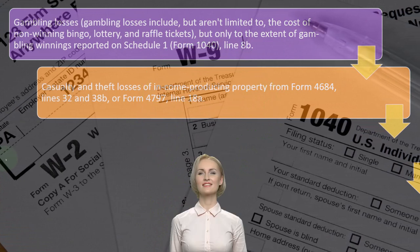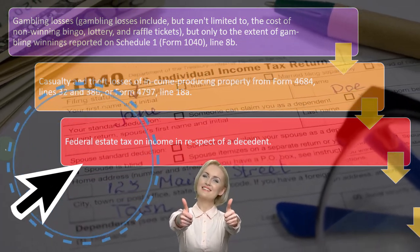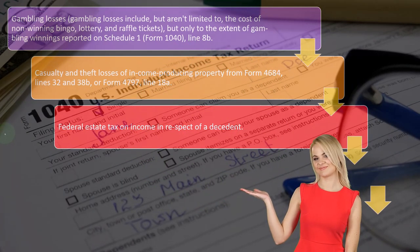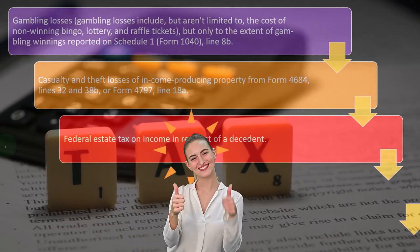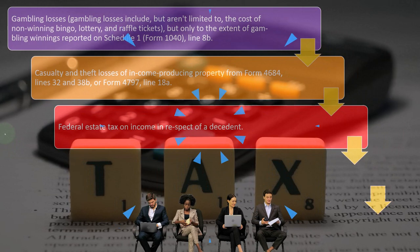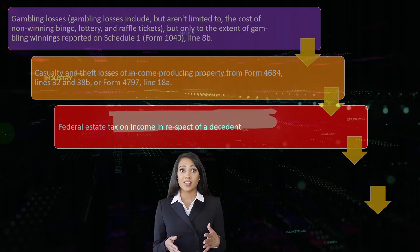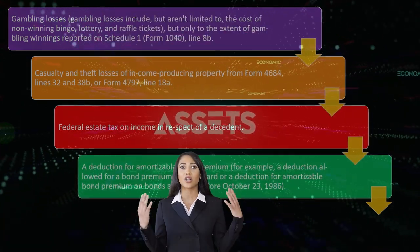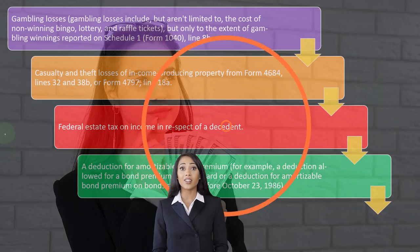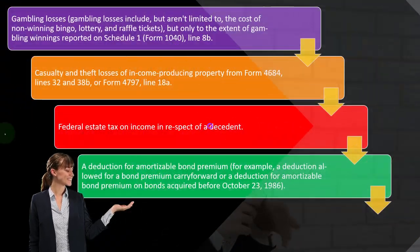If you're dealing with someone that gambles all the time, you would want to tell them: if you're itemizing and going to have significant winnings and losses, make sure you can track the losses so that we can properly deduct them and get any benefit we can. Casualty and theft losses of income-producing property come from Form 4684, line 32 and 32b, or Form 4797, line 18a. Federal estate tax on income in respect of a decedent — that's a fairly unusual situation. When someone dies, if they are a wealthy individual they might be subject to an estate tax, which is different from an income tax situation, and there could be unusual circumstances where you don't want to be double-taxed on the estate tax.